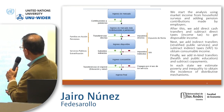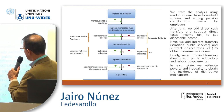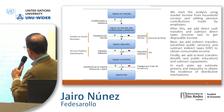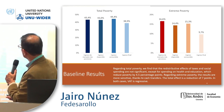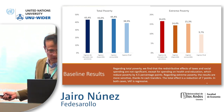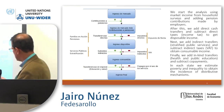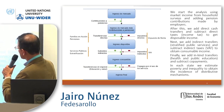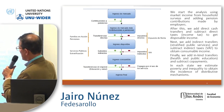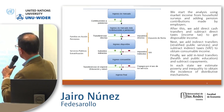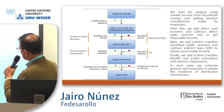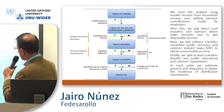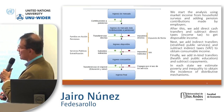We add to the income the direct cash transfers — programs like Familias en Acción and pensions here in Colombia — and we subtract the direct taxes like income tax, to get the disposable income.